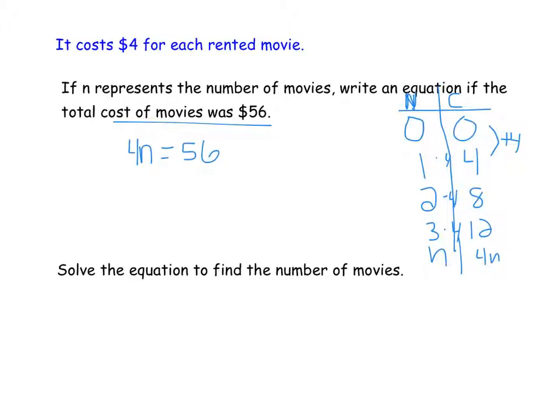So again, because our rate was $4 for each movie, if we didn't know how many we rented, we could do 4 times that number. So now I have my equation.